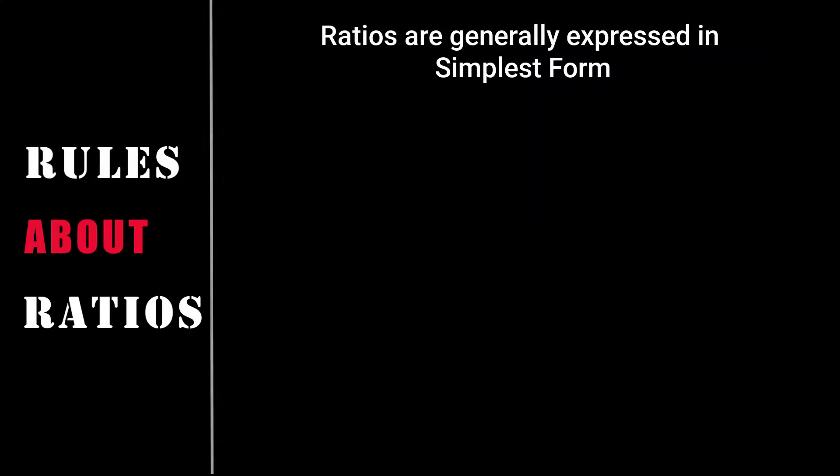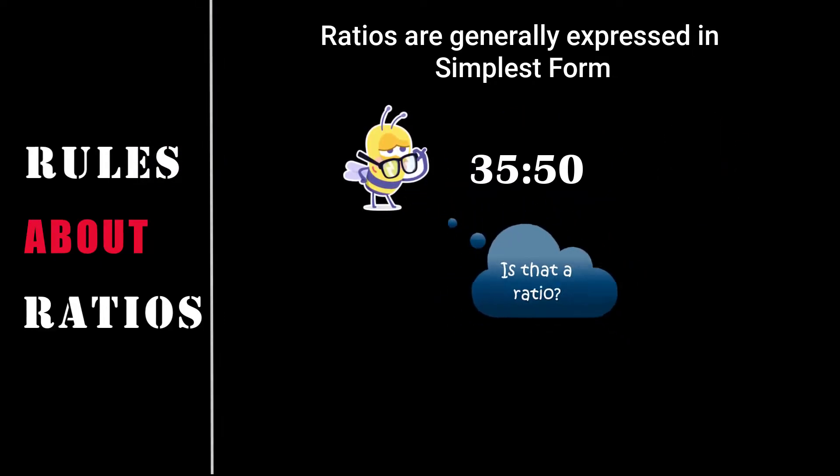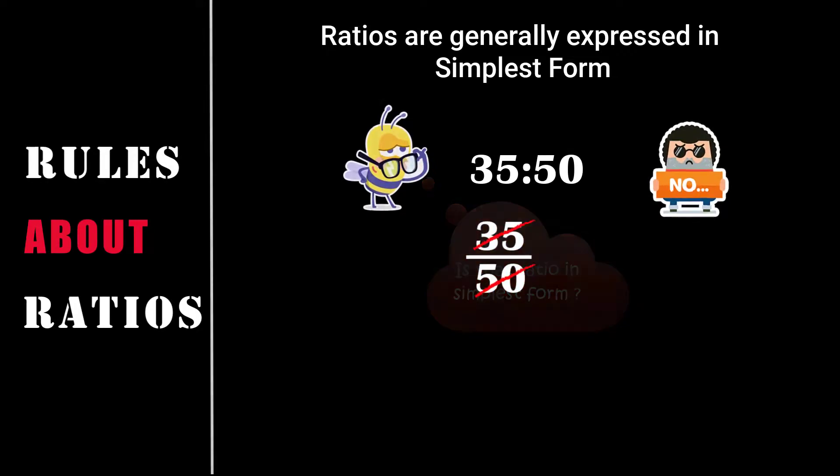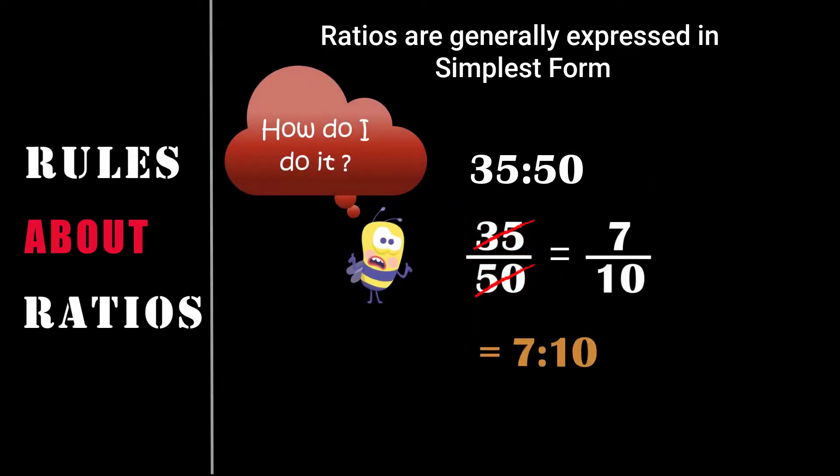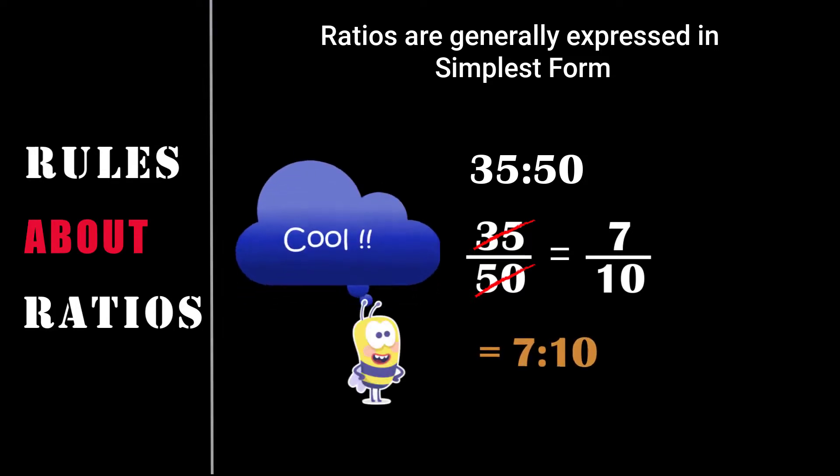Now moving on to the last rule. Rule number 5: Ratios are generally expressed in simplest form. What do I mean by simplest form? It means representing the given fraction in the lowest term. For example, we have 35 is to 50. Is that a ratio? Yes, it is. But is it in the simplest form? No. So how do we express it in simplest form? We need to divide both the numerator and the denominator by a common factor. 35 and 50, the common factor that divides both these numbers is 5. So we divide the numerator and denominator by 5. We get 7 is to 10. So 7 is to 10 is the simplest form for the ratio 35 is to 50.